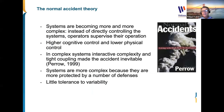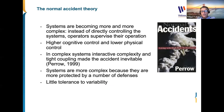There was a very significant change in accident models and techniques from one book — written by Charles Perrow, a famous researcher who worked on complex accidents in industries like nuclear power and aviation. He developed the Normal Accident Theory.